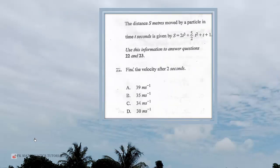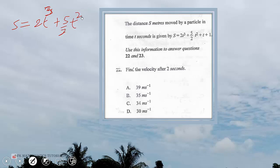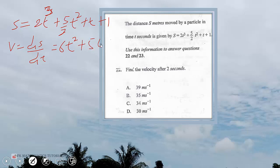Question 22: the distance s meters moved by a particle in time t seconds is given by s equals 2t cubed plus 5 over 2 t squared plus t plus 1. Use this information to answer questions 22 and 23. To find the velocity after two seconds, given s, the velocity is given by ds/dt, which gives us 6t squared plus 5t plus 1.